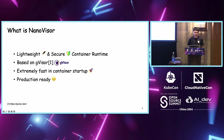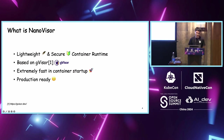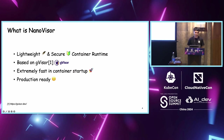NanoVisor is a lightweight secure container runtime, which is based on the CNCF project GVisor. GVisor, as you all know, is a well-known security runtime which is very lightweight and popular. What makes NanoVisor different from GVisor is it focuses on extremely fast speed in FaaS, to achieve a very good startup time. It is production ready and used in our FaaS production, which I will show you later.